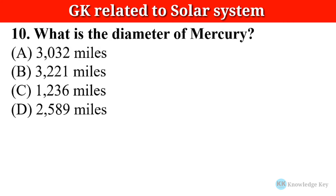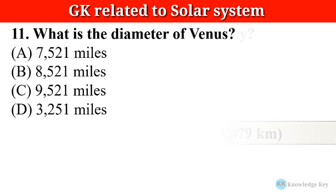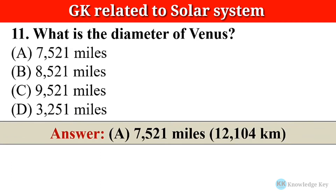Question number ten: What is the diameter of Mercury? The correct answer is option A — 3,032 miles, which is equal to 4,879 kilometers. Question number eleven: What is the diameter of Venus? The correct answer is option A — 7,521 miles, which is equal to